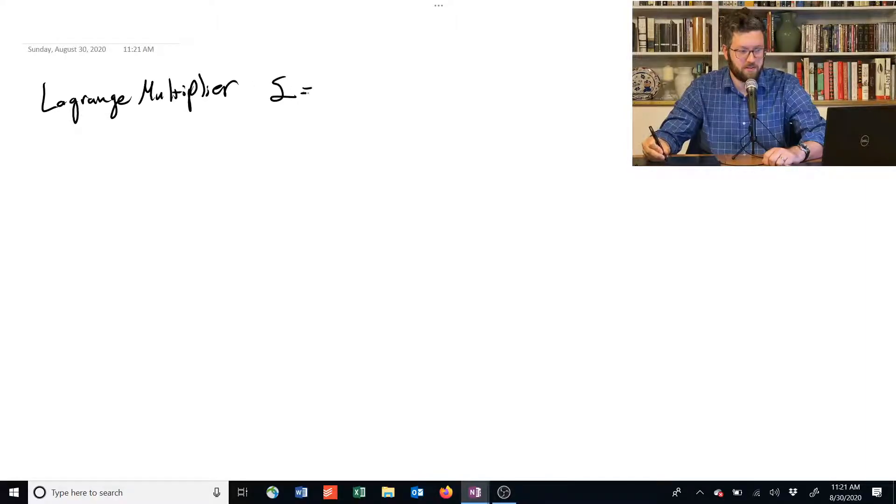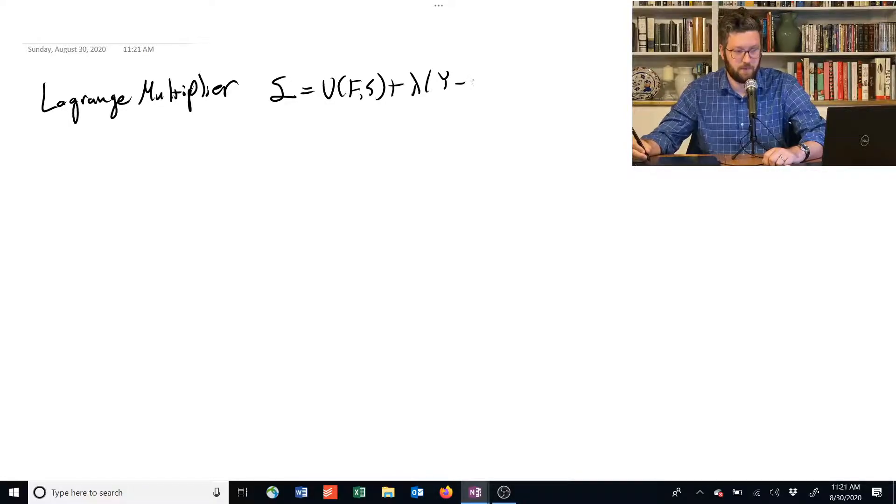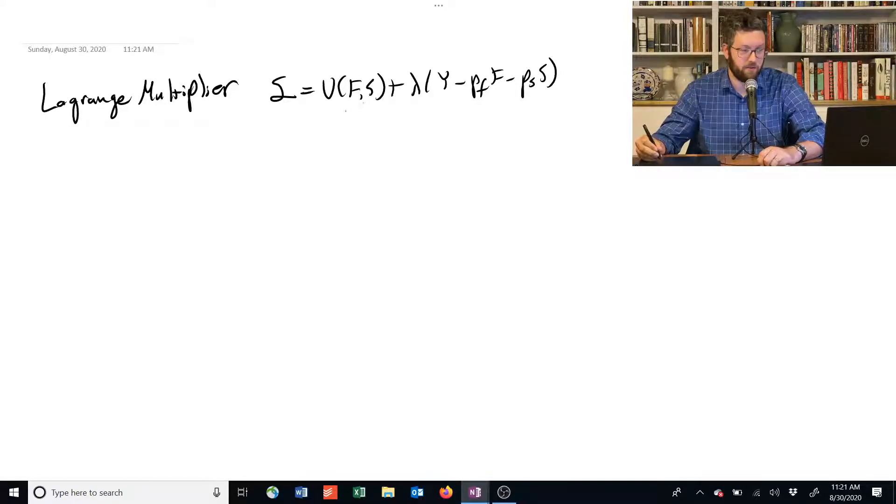So remember, if we're maximizing utility, we're going to have a function that looks like this. If we set up our Lagrangian correctly, and we're doing our sort of example problem that we've been going through.